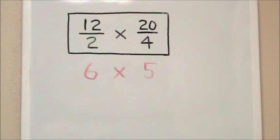12 over 2 simplifies to 6, since 2 goes into 12 six times.